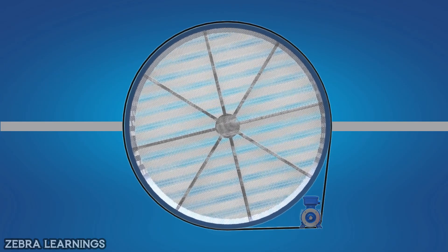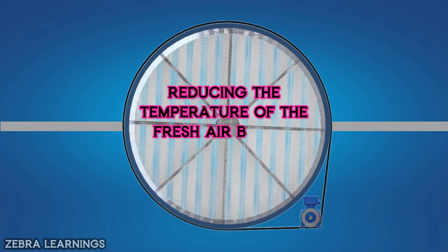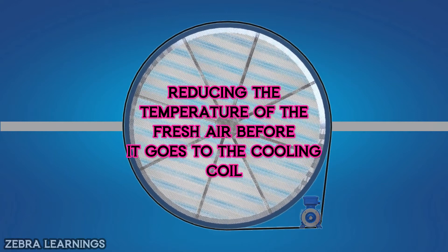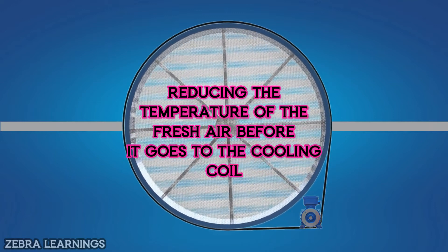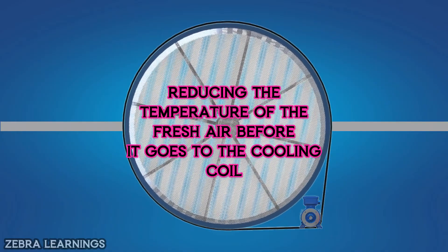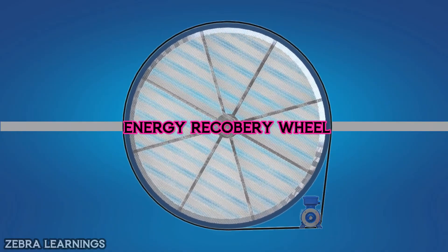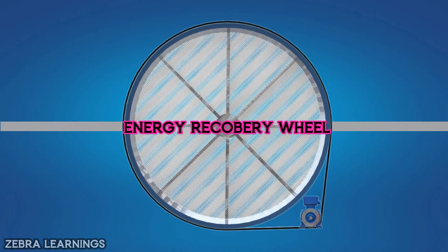This is how the thermal wheel works. The important job of the thermal wheel is to lower the temperature of the hot air coming from outside before it goes to the cooling coil. This is why we call it an energy recovery wheel.